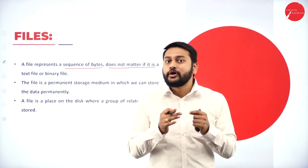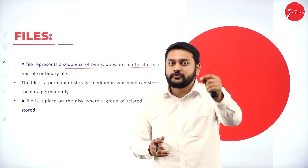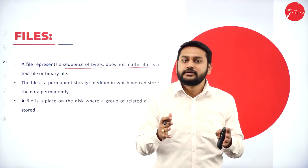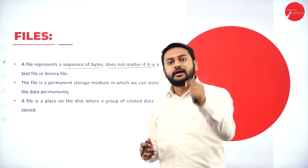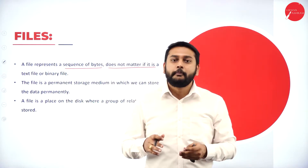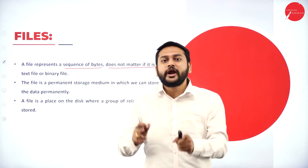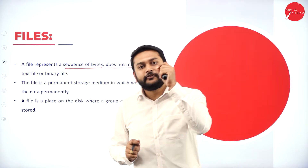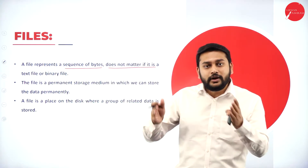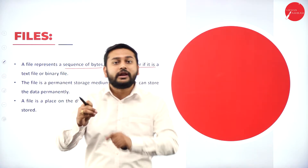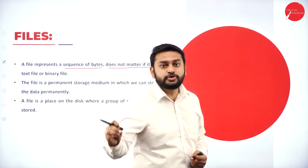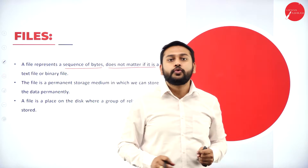We have text files because we are able to read data that is in text format. When content is in binary format, we are not able to read it directly. But we still have binary files because they are faster than text files — the data is stored in memory format, which is the advantage of binary files.